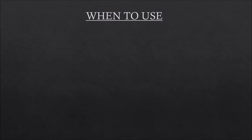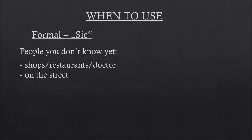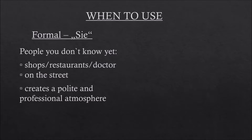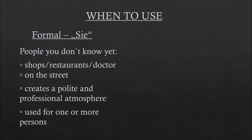Let's go back to our situation to understand better why they use different forms. David used Sie because he didn't know Anna before and he didn't want to be impolite. Sie is used with people you don't know yet — for example, if you talk to someone in a shop, in a restaurant, at the doctor, or on the street. Sometimes, even if you already know people, you still use Sie — for example at work — because it creates a polite and professional atmosphere. Going to the same workplace or restaurant a second time doesn't change the use of Sie automatically. By the way, Sie can be used speaking to one or more persons in a formal situation, and it's always written with a capital S.